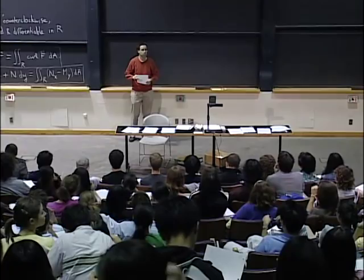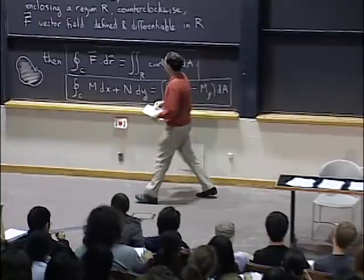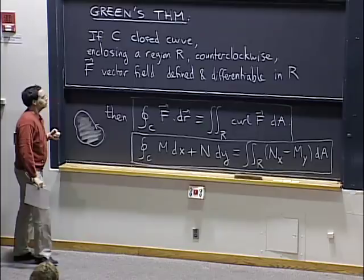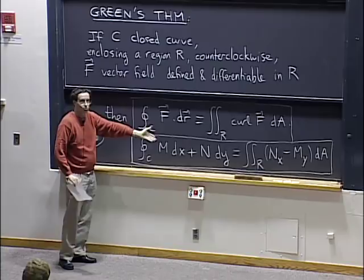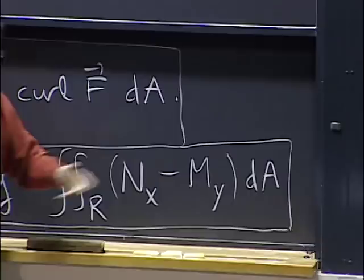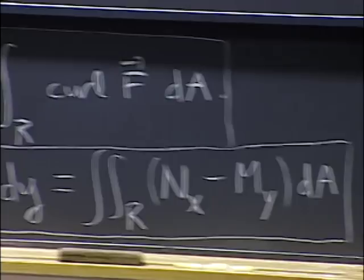One remark: the theorem says counterclockwise. What if I have a curve that goes clockwise? Well, you could just take the negative and integrate counterclockwise. Why does the theorem choose counterclockwise over clockwise? The answer is basically in our convention for curl — we said curl is n_x minus m_y and not the other way around. That's a convention, and somehow the two conventions match with each other. If you met somebody from a different planet, they might have Green's theorem with the opposite conventions.